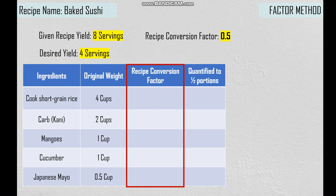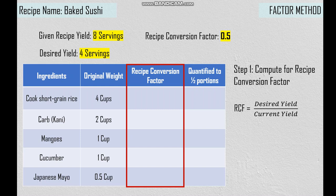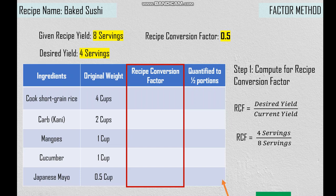The third column is for the recipe conversion factor while the fourth column will be the quantified one-half portions. In the factor method, we only have two steps. The first step is to compute for the recipe conversion factor. RCF is equal to desired yield divided by current yield. We substitute all the given into the formula: desired yield is 4 servings as our numerator while 8 servings is the current yield as our denominator.